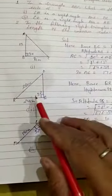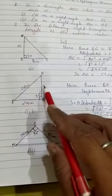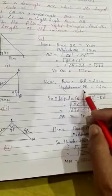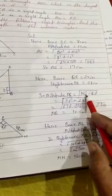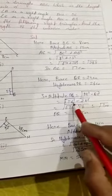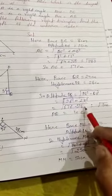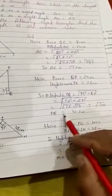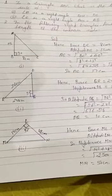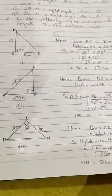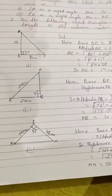For the second part, the base is 24 cm and the hypotenuse is 26 cm. You have to find the altitude. PQ squared equals hypotenuse squared minus base squared, so 26 squared equals 676 minus 576 equals 100. Therefore PQ equals 10 cm. This is how you can solve these questions when you are given two sides and need to find the third.